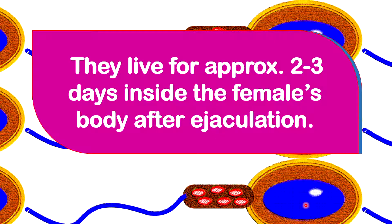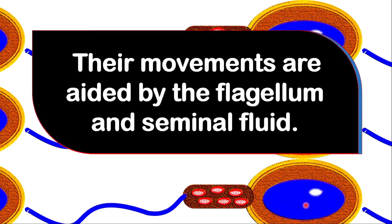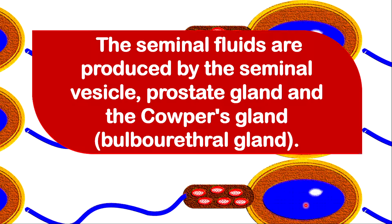They live for approximately two to three days inside of a female's body after ejaculation, which means if ejaculation occurs and there is no egg, if an egg becomes available after two to three days, the female can still become pregnant. The sperm can move on their own. It does this by the movement of the flagellum and is assisted by the seminal fluids. Seminal fluids are produced by accessory glands. These accessory glands are called seminal vesicle, prostate gland, and the cowper's gland. The cowper's gland is also called the bulbourethral gland.